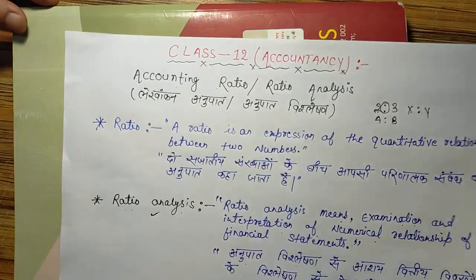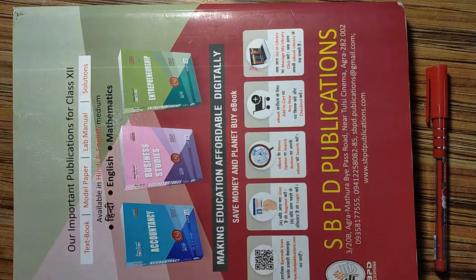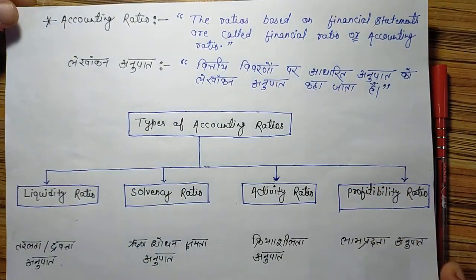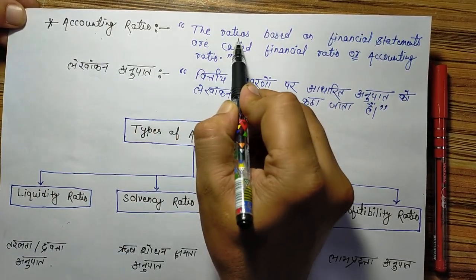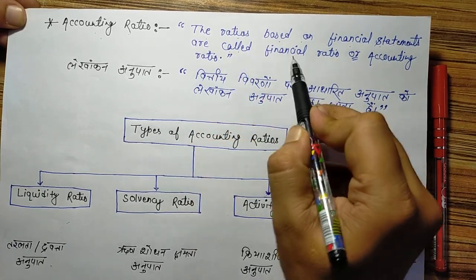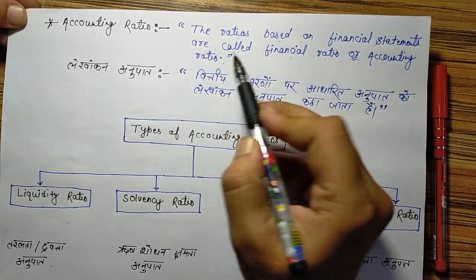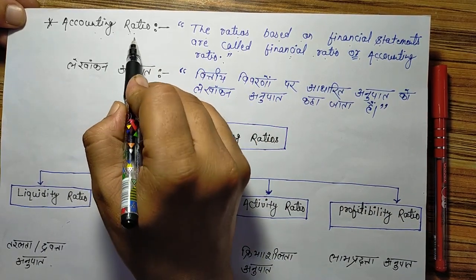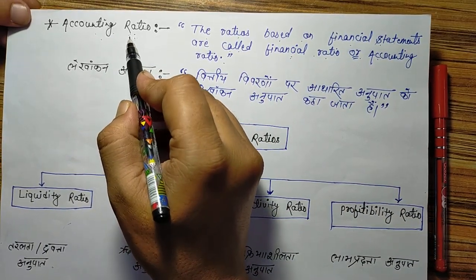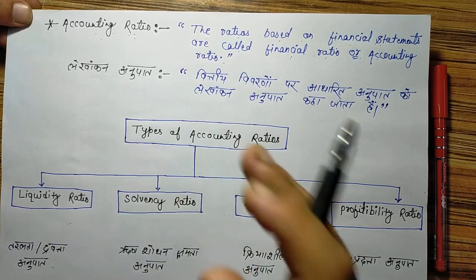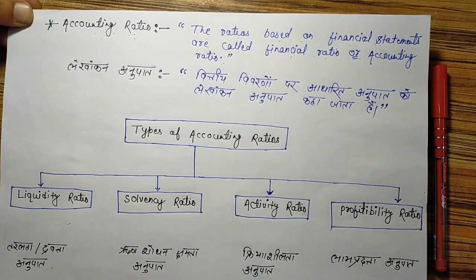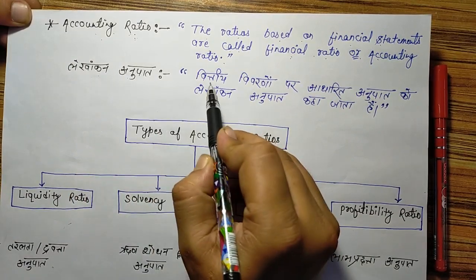What is accounting ratio? Accounting ratio means the ratios based on financial statements are called financial ratio or accounting ratio. Accounting ratio is a ratio which is financial-statement based — trading and profit and loss account, statement of profit and loss, and balance sheet. These three statements are the basis of financial ratio or accounting ratio.